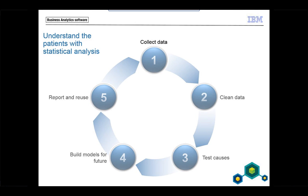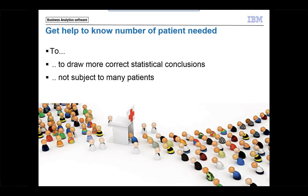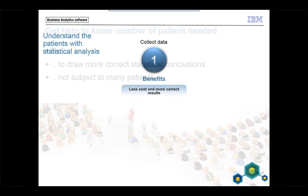Let's start with the first step: collecting data. How many patients do I need to collect for my study if I'm going to make interviews, for example, and draw statistically correct conclusions? I really need enough patients to get correct conclusions, but not too many — that is not ethical and it also costs more. We have a tool that can help you find out how many you need to collect. The benefits are cost savings and more correct results when you have the right number of people in your data.